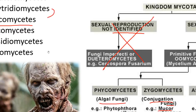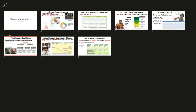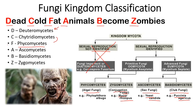So the full series is: Deuteromycetes, Chytridiomycetes, Phycomycetes, Ascomycetes, Basidiomycetes, and Zygomycetes. If you remember the short names — algal fungi, conjugation fungi, sac fungi, club fungi, and Fungi Imperfecti — it will be easy to remember their functions and behaviors. The easy way to recall all of them is: 'Dead cold fat animals become zombies.' If you know this, you can construct the full classification table on your own.